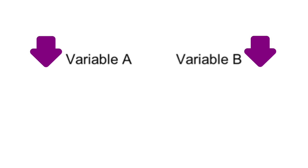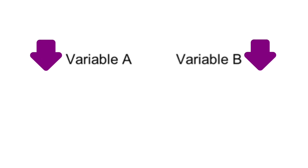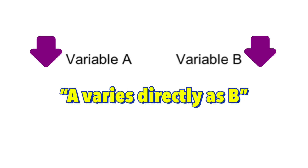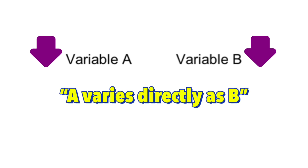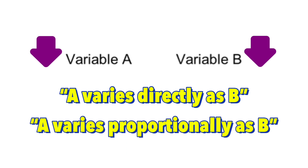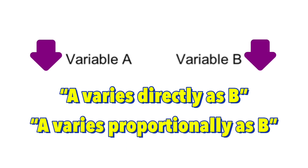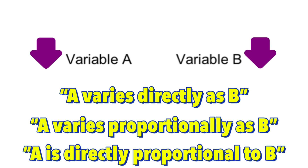Whenever we see this type of relationship where both variables increase or decrease together, we can say that A varies directly as B, or A varies proportionally as B, or A is directly proportional to B.